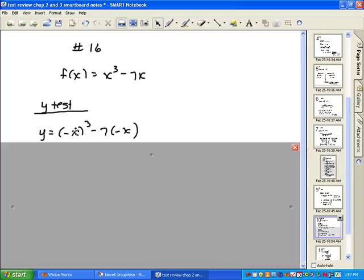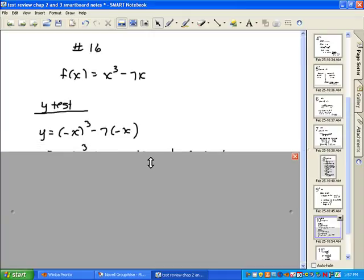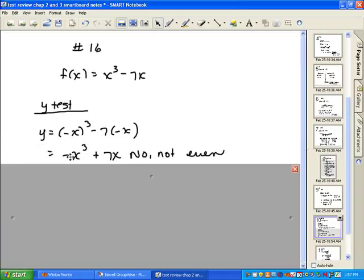If you have a negative raised to an even power, it will become positive. This one is a negative raised to an odd, so it becomes negative. This is a negative times a negative, that's a positive. What we have now does not look like our original problem, so this is a no. So this one is not even.